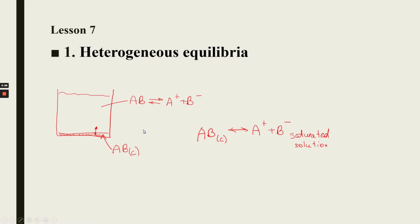To make a conclusion about whether a precipitate will be formed or not, we have to calculate the concentration product. The concentration product is Cp, and we compare it with the solubility product — if Cp is higher, lower, or equal — and then we make a conclusion.